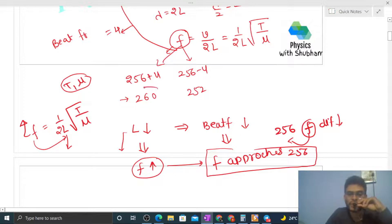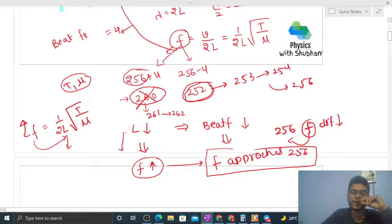Now look, if we increase f, then f should approach 256. So if we take f value as 260 and increase it to 261, then 262, it is moving away from 256. Its difference from 256 is increasing, so beat frequency will increase. So the option 260 is not correct. You have to take 252.